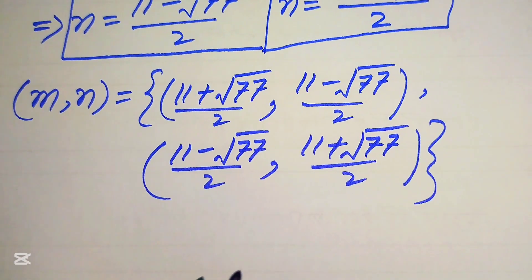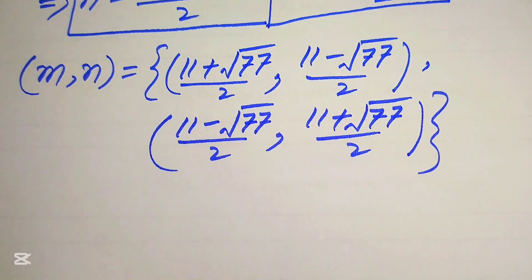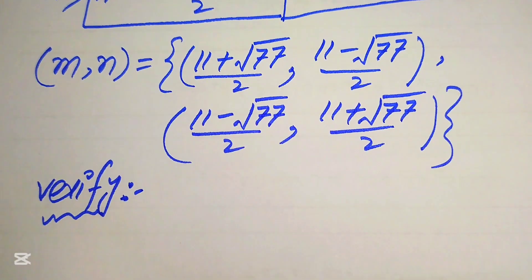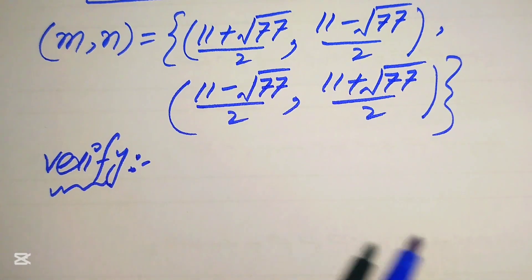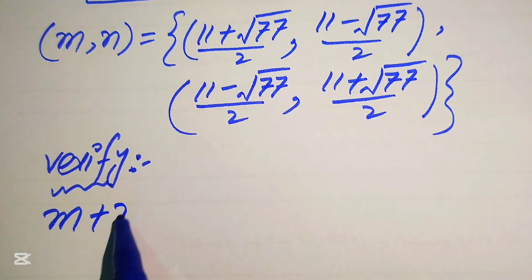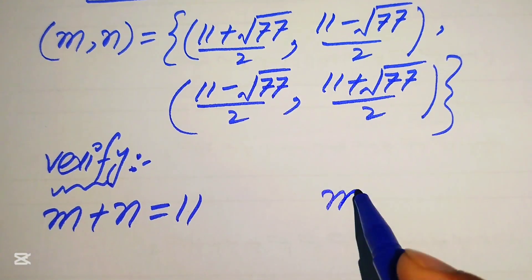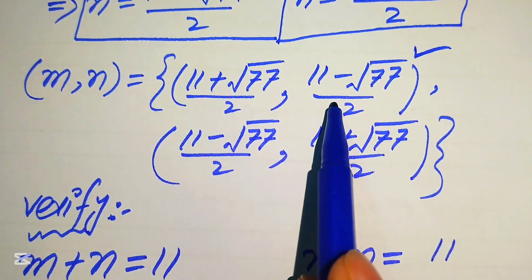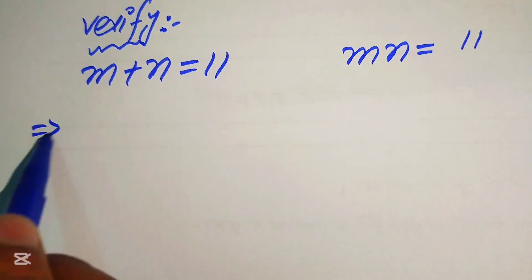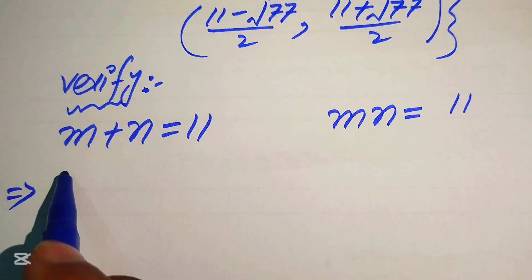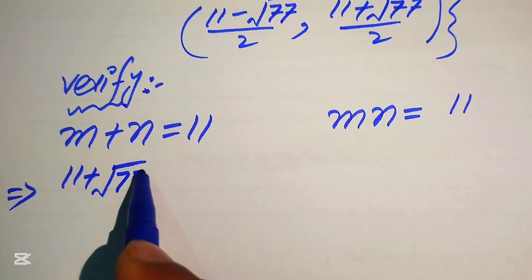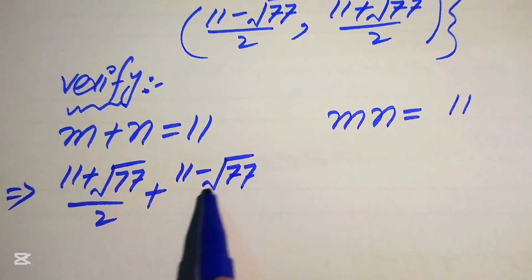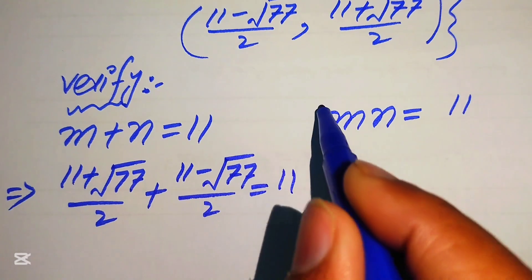Now we verify these solutions. We verify one solution and leave the other for you. The given equations are m plus n equals 11 and mn equals 11. In the first equation, we put m equals (11 plus square root of 77) divided by 2 and n equals (11 minus square root of 77) divided by 2, and this should equal 11.